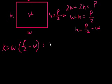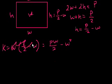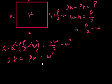k is equal to w times p over 2 minus w, which is pw over 2 minus w squared. When I look at the solutions, they don't have any fractions in it. So let's multiply both sides of the equation by 2. You get 2k is equal to pw minus w squared. Let's add w squared to both sides. You get w squared plus 2k is equal to pw.